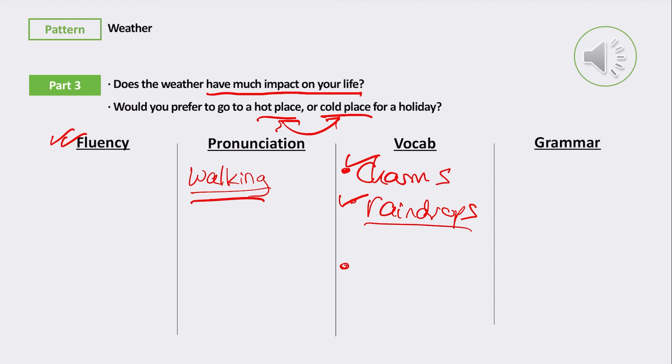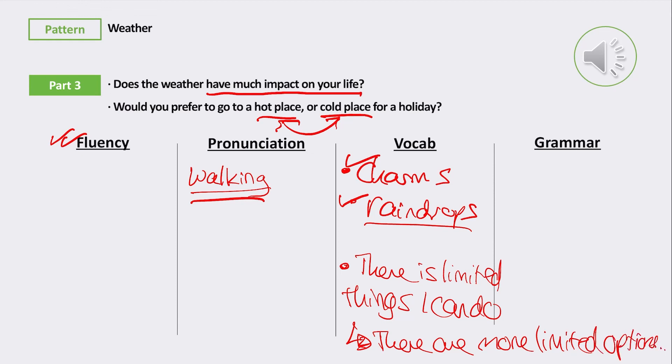The only thing where she missed a couple of chances to use more high-level vocabulary is that she said 'in a cold place there is limited things I can do', which could have been changed into 'there are more limited options for activities in a cold place'. That would have been a slightly more high-level answer.